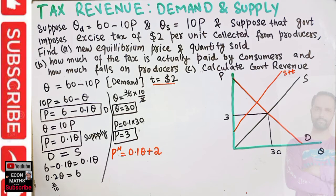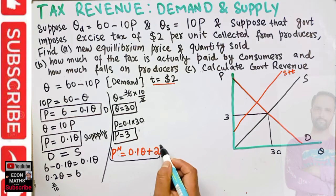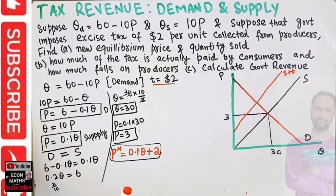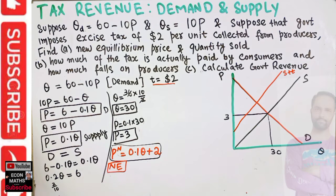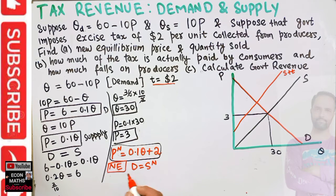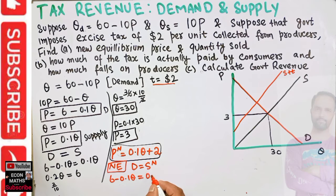The new supply curve is shown on the graph. New equilibrium occurs where the new supply intersects the old demand curve. Setting demand equal to new supply: 6 minus 0.1q equals 0.1q plus 2.